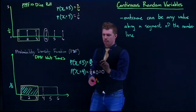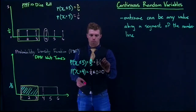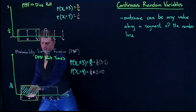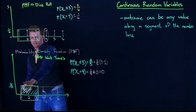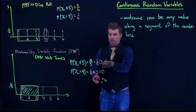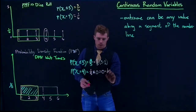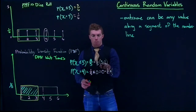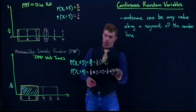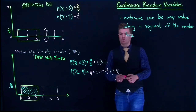Writing it out: P(X ≤ 3) = (1/5) × (3 − 1) = (1/5) × 2 = 2/5. And for P(X = 4): that equals (1/5) × (4 − 4) = (1/5) × 0 = 0. The maximum minus minimum gives us zero width, so the probability is zero.